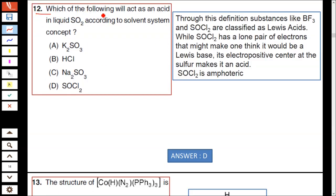Question number 12: Which of the following will act as an acid in liquid sulfur dioxide according to solvent system concept? Through this definition, substances like BF₃ and SOCl₂ are classified as Lewis acids. While SOCl₂ has a lone pair of electrons that might make one think it would be a Lewis base, its electropositive center at the sulfur makes it an acid. Hence SOCl₂ is amphoteric, acts as a base as well as acid. Hence option D is correct. SOCl₂ acts as an acid in liquid SO₂.